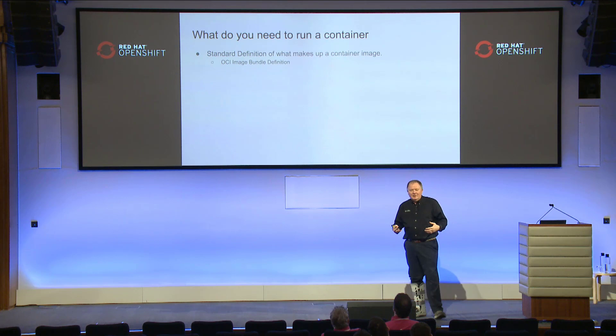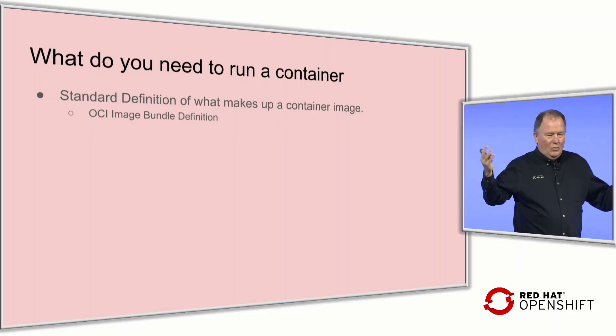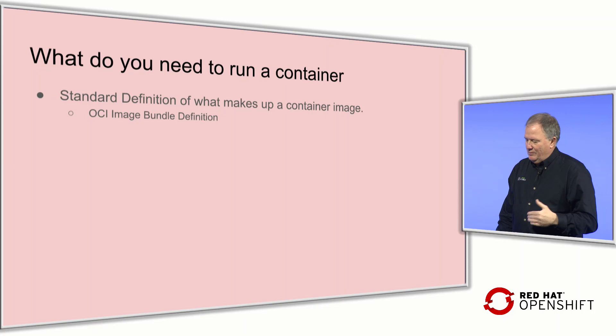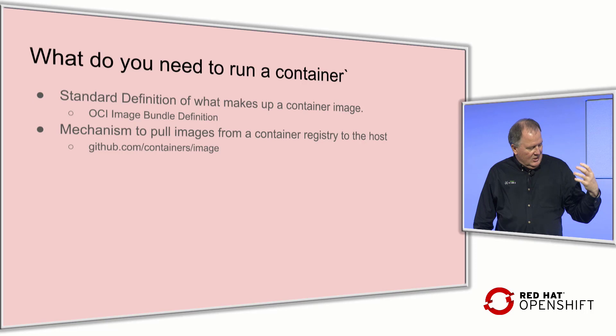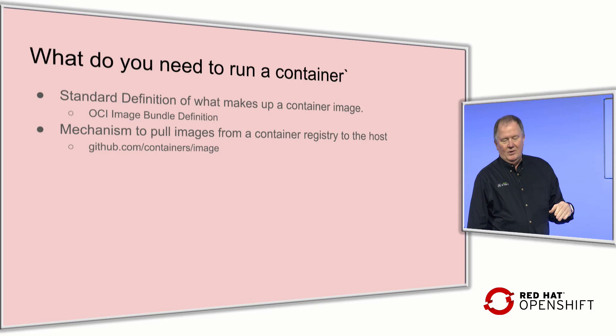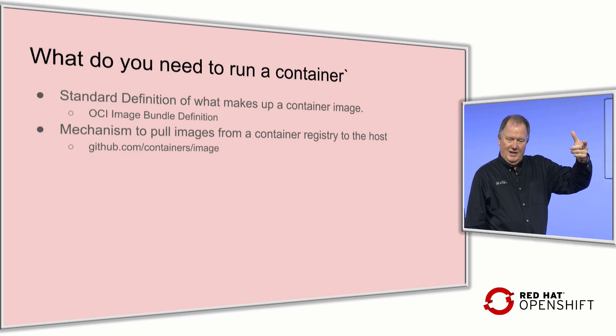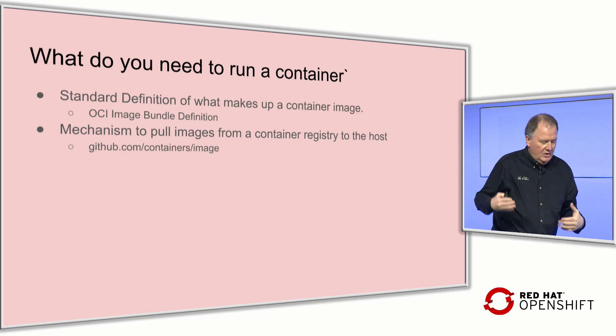Container registries are nothing more than a web service — just a web server with web protocols interacting between them. The second thing you need when running a container is to pull that OCI image from the registry to your host. We built a library for that called Containers Image. It was based on a tool called Scopio. Scopio implemented all the protocols needed to pull container registries to the host, based on the Docker technology for pulling registries.